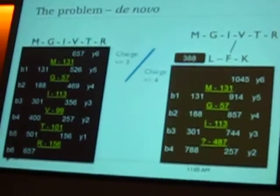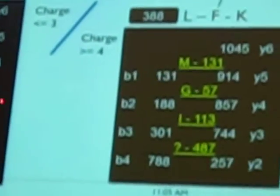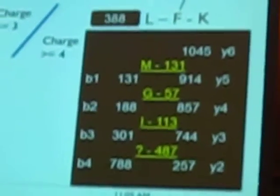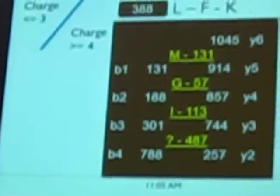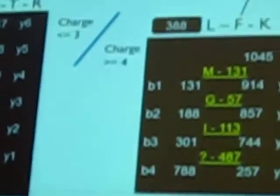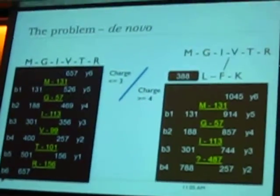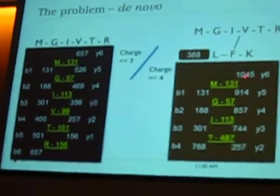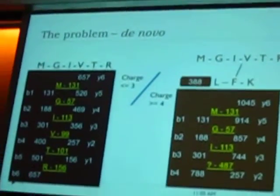The other difference is charge. In the fragment spectra, charge is not known — either we try to predict the charge, or deconvolute the charge, or we check for all possible charges. When we have charge less than or equal to three, we have just three options for each spectrum. When we have charge greater than or equal to four — in some cases up to eight — for each of those three, we have to check for eight possibilities. So even deconvolution gets really tough.